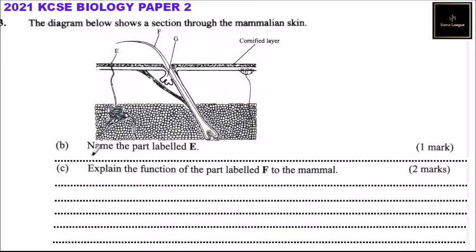Part B: name the part labeled E. Part E is the sweat pore — this is where sweat comes out through the skin.